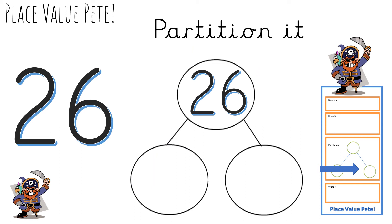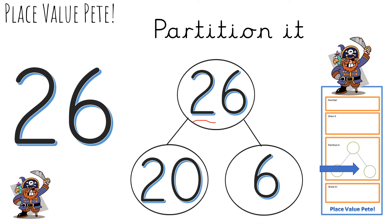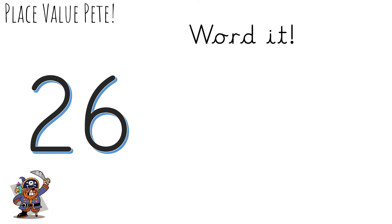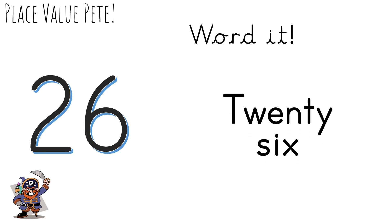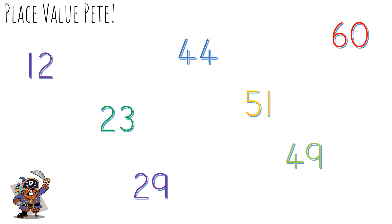Now we have to partition it. Can you remember how to do that? We need to look at the number and split it — partition it into tens and ones. How many tens has this number got? It's 20 — two tens. And how many ones? Six. Excellent. The final one is word it. What number is this? 26. Say the sounds in 26 and do your best. Excellent.